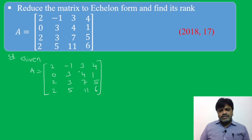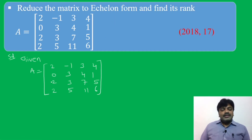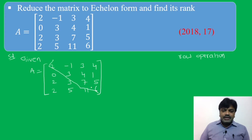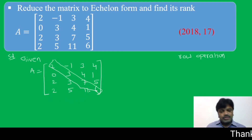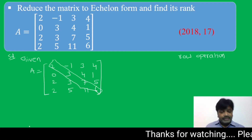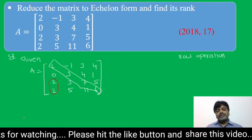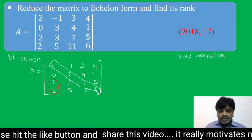How are we reducing this matrix into echelon form? The procedure is we apply elementary row operations to make the below-diagonal elements equal to 0. First, I make these two elements 0 by using R1, because the second row's first element is already 0.